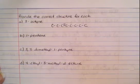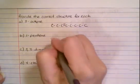The next one is 1-pentene. So the ene tells us we have a double bond, and this time if it's pentene we have 5 carbons.